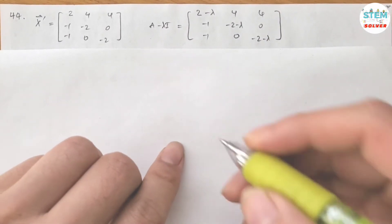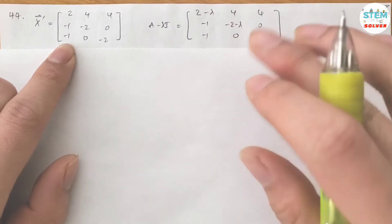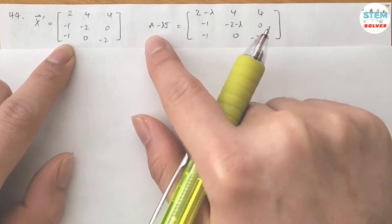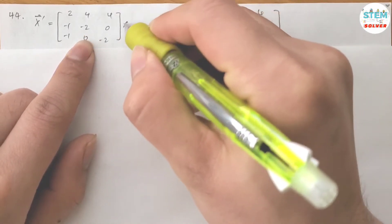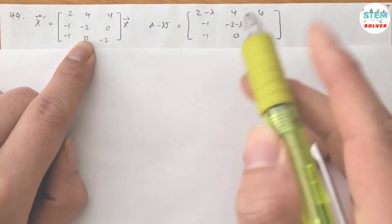The general solution for the given system: So you're given this system, first you need to find A-lambda-I. What is A? Let's call this matrix A and then subtract it with lambda-I, that gives you this matrix.